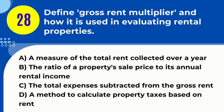Question 28. Define Gross Rent Multiplier and how it is used in evaluating rental properties. A. A measure of the total rent collected over a year. B. The ratio of a property's sale price to its annual rental income. C. The total expenses subtracted from the gross rent. D. A method to calculate property taxes based on rent. Answer: B. The ratio of a property's sale price to its annual rental income. Explanation. The Gross Rent Multiplier, GRM, is a tool used in evaluating rental properties, calculated by dividing the property's sale price by its annual rental income. It provides a quick way to estimate the value of an income-producing property and compare it with similar properties.